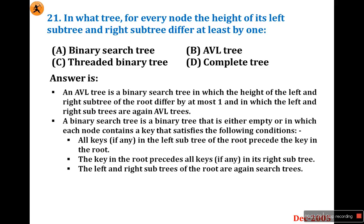The binary search tree conditions are: all keys in the left subtree of the root precede the key in the root, the key in the root precedes all keys in its right subtree, and the left and right subtrees of the root are again search trees. It must hold all conditions of a tree plus these three additional conditions.